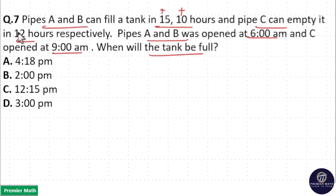Here A and B are filling pipes and C is an emptying pipe. A can fill it in 15 hours, B can fill it in 10 hours, and C can empty it in 12 hours.